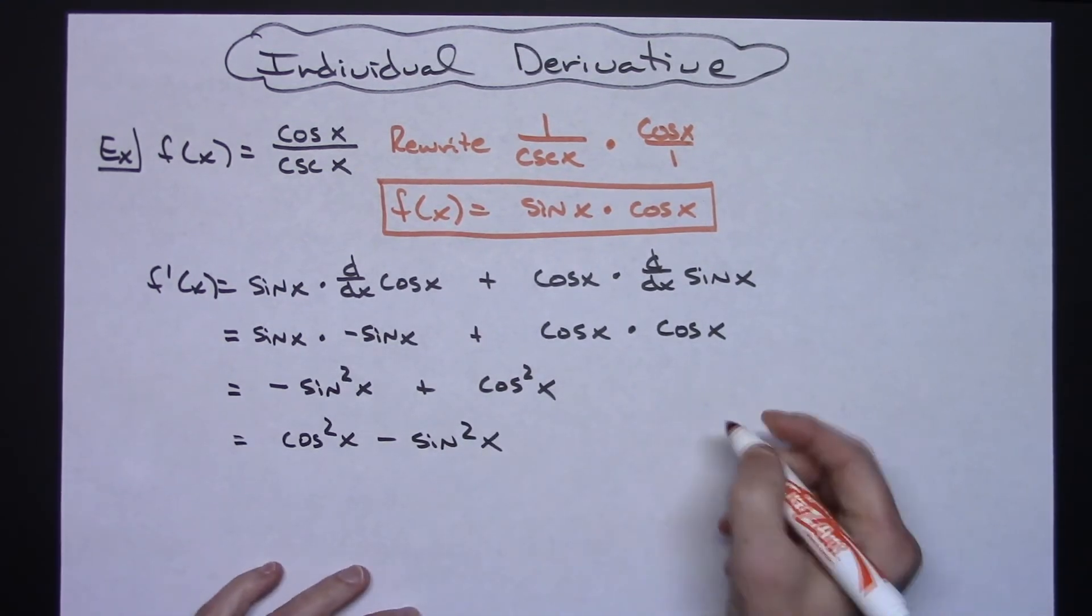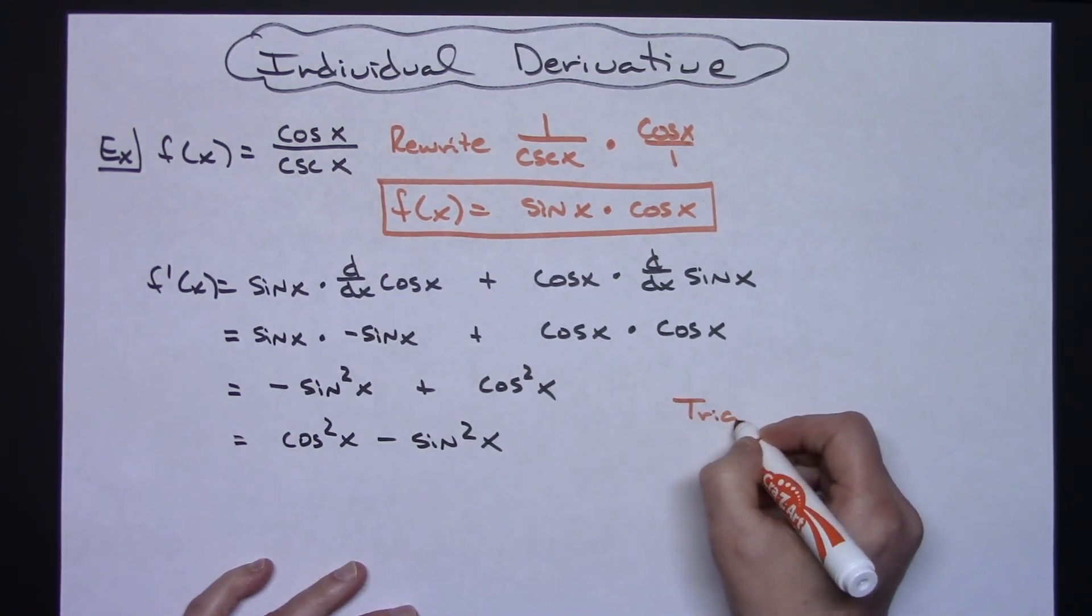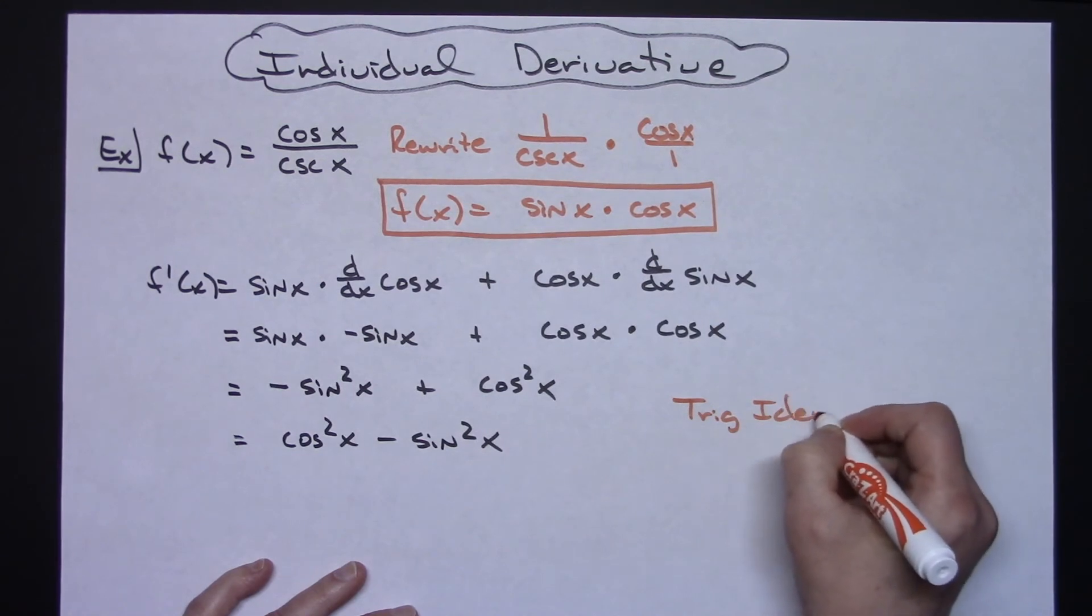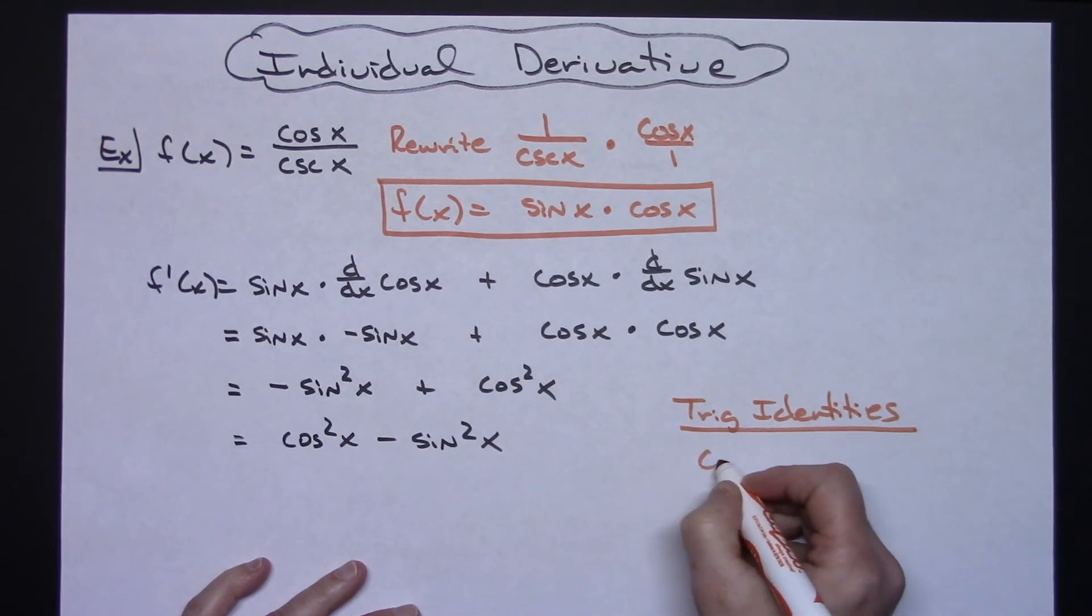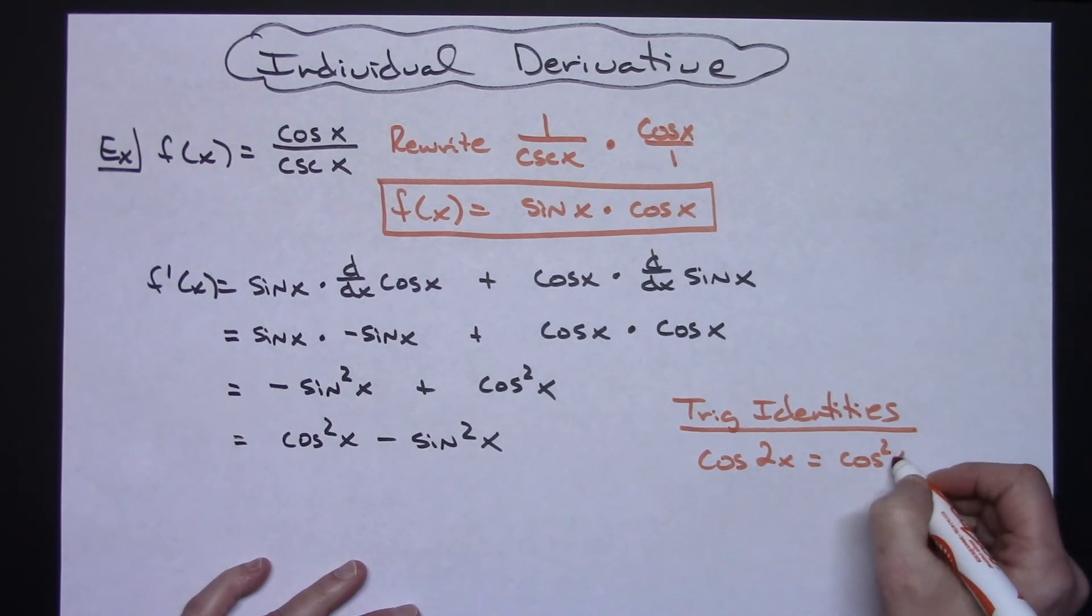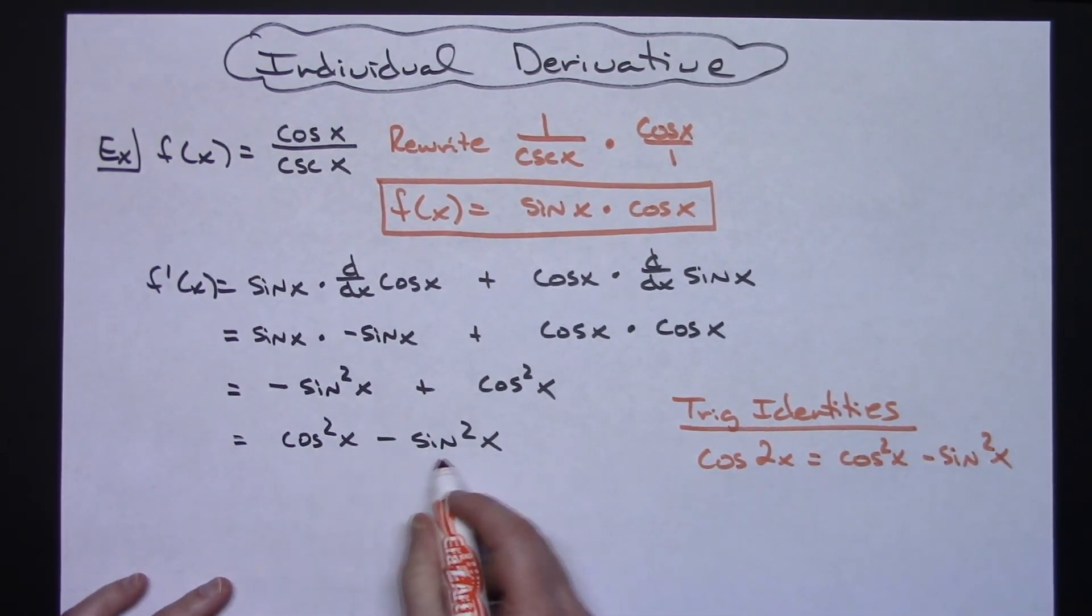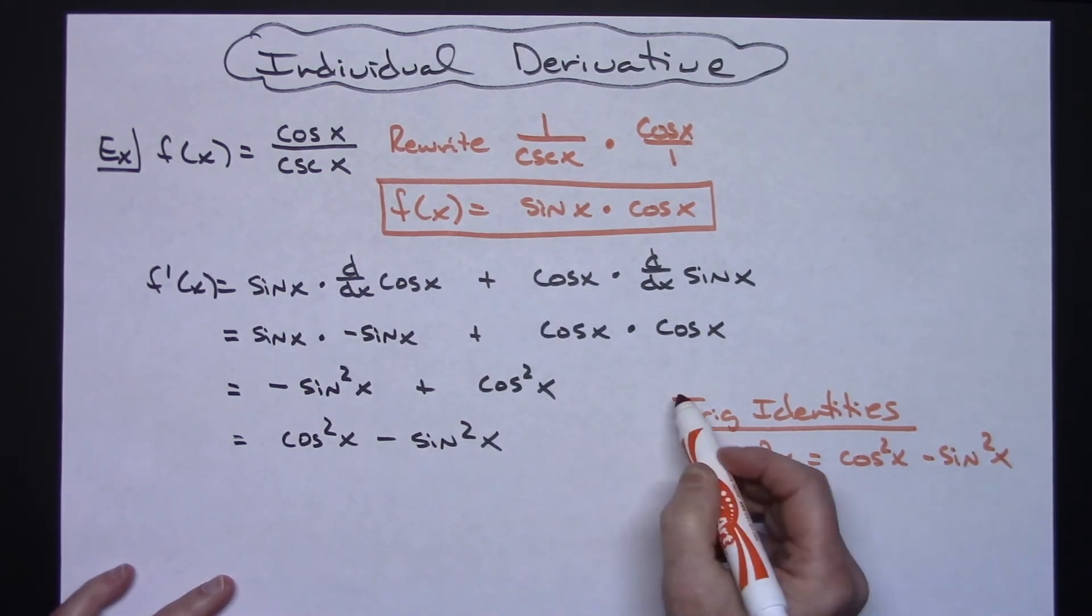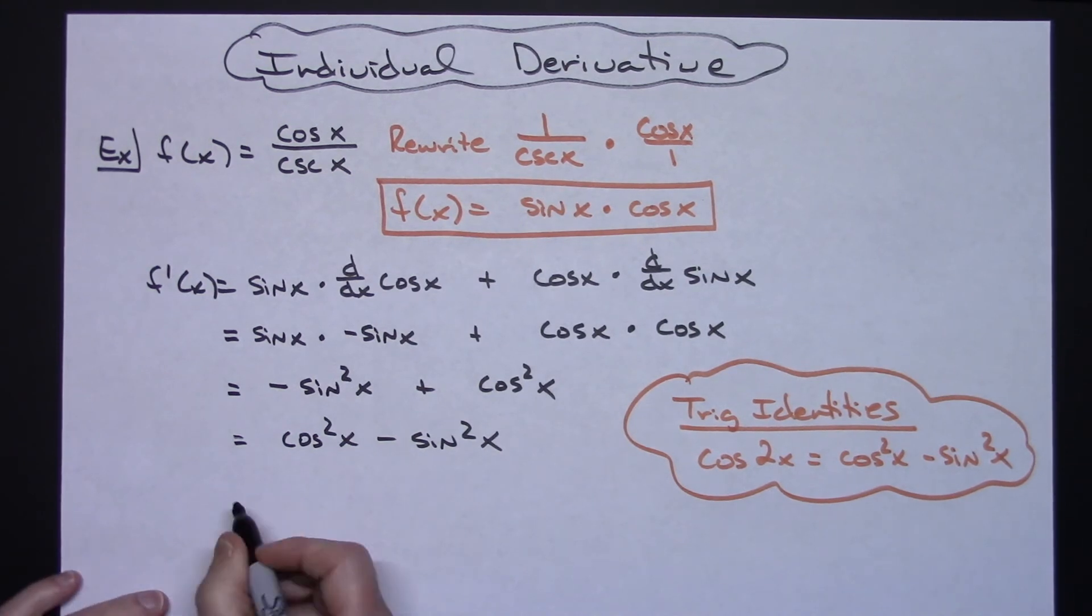If you're really good with your trig identities, if you recall your trig identities here, we have got one that is cosine 2x equals cosine squared x minus sine squared x. That's what we have right there, so if you're really good with those, then you could even make that final substitution here, making the final derivative there a cosine of 2x.